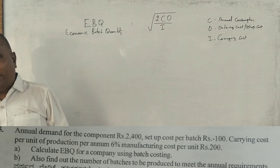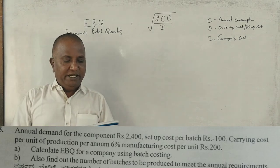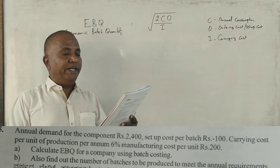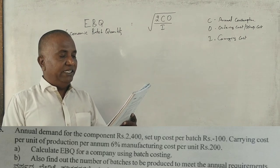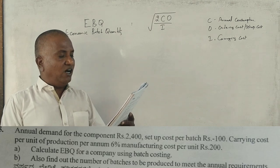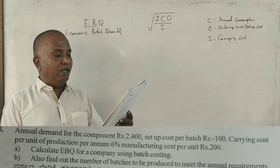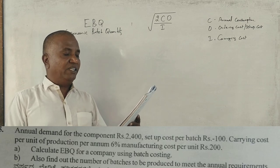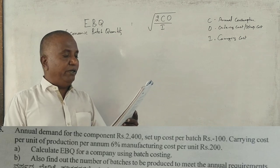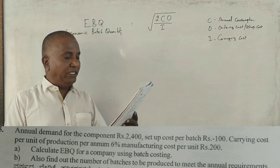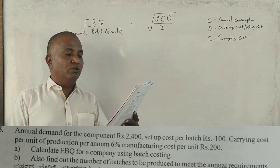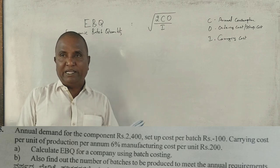2021, one question is: annual demand for the component is Rs. 2400, setup cost per batch is 100, carrying cost per unit of production per annum 6%, manufacturing cost per unit is 200. Calculate EBQ for a company using batch costing and also find out the number of batches to be produced to meet the annual requirement.